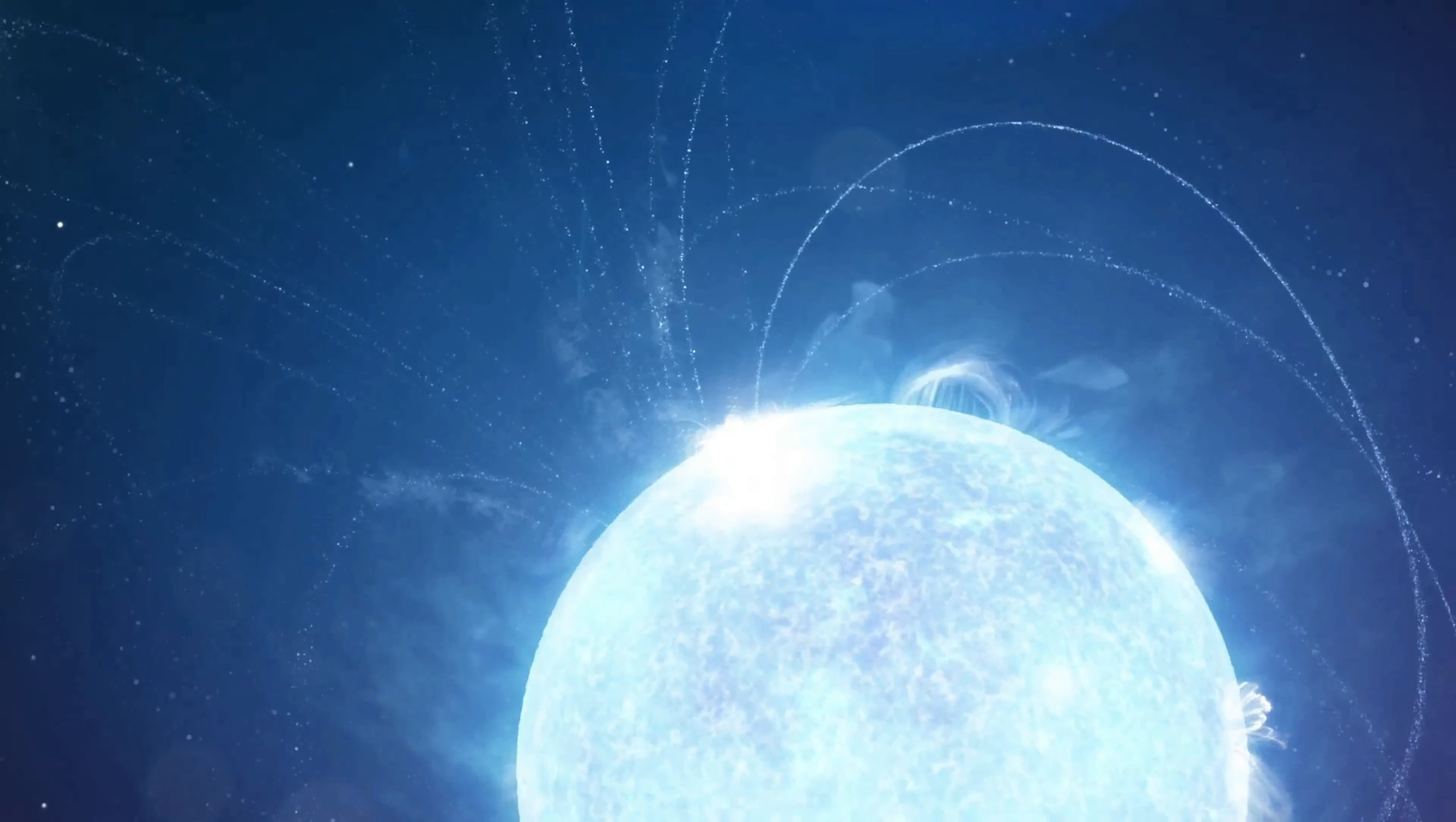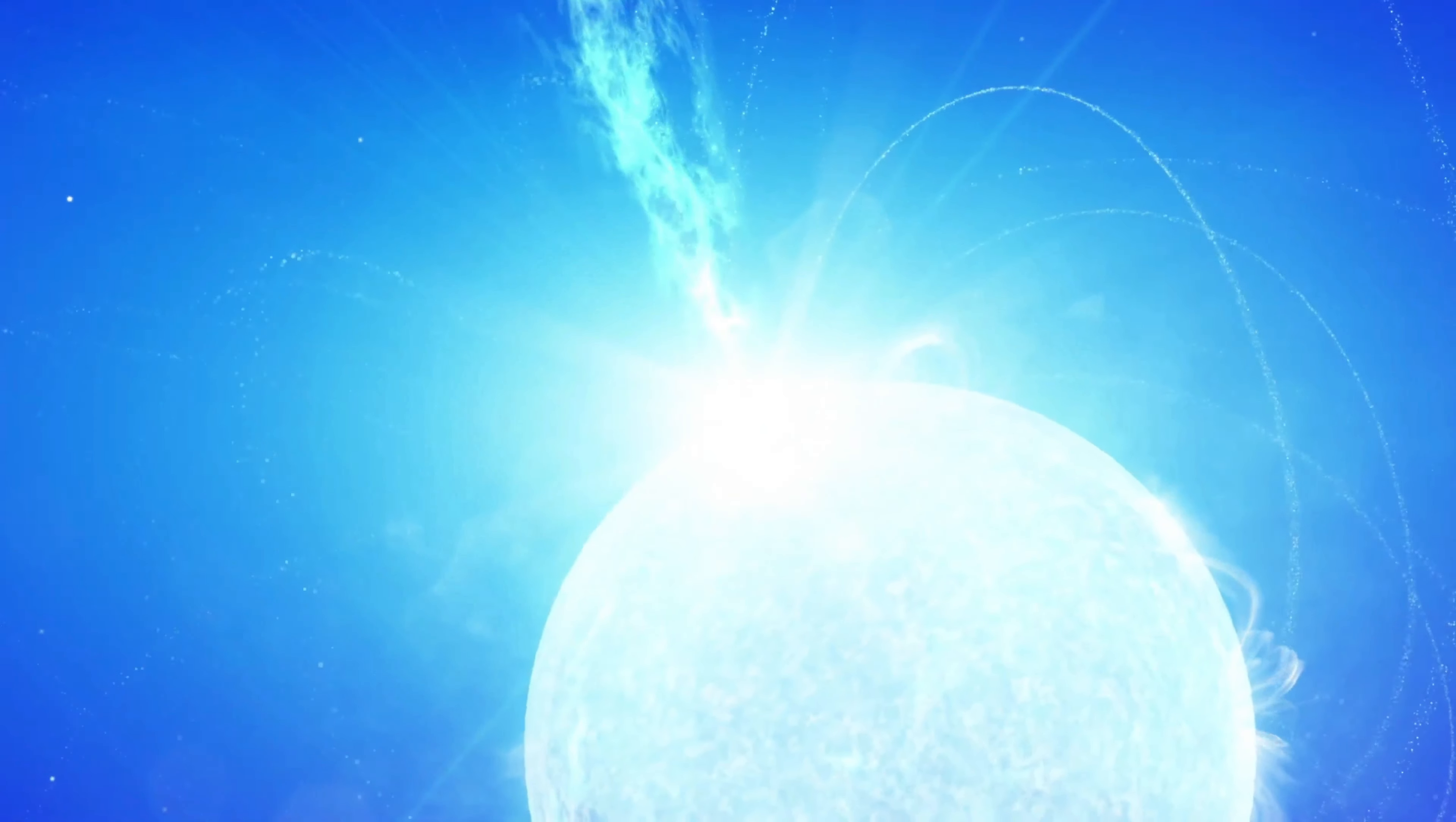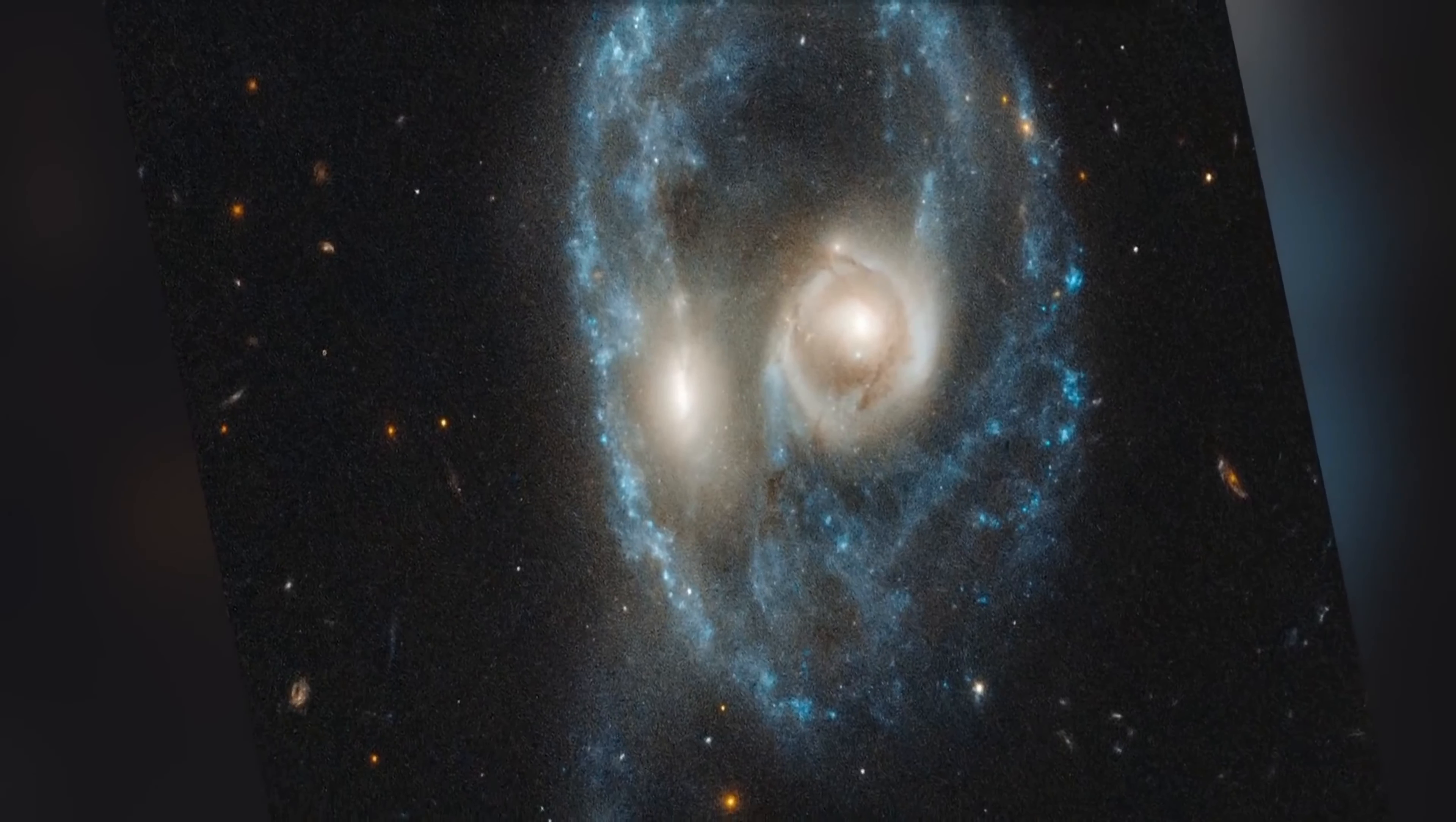NASA's Hubble Space Telescope shared an image of a planet growing, giving astronomers a rare look at a Jupiter-sized, still-forming planet. NASA shared an image of the exoplanet, a planet outside the solar system called PDS-70b.